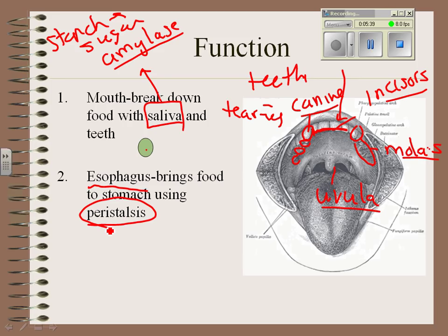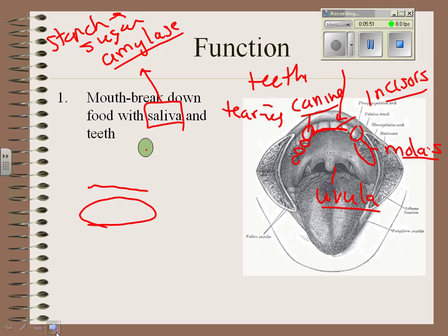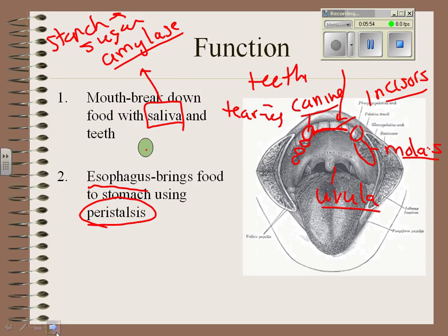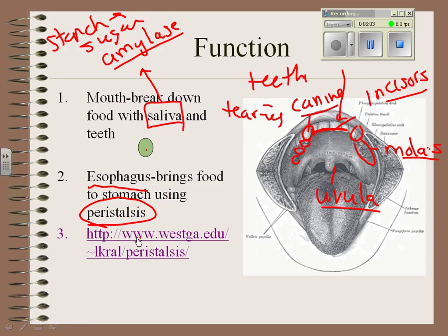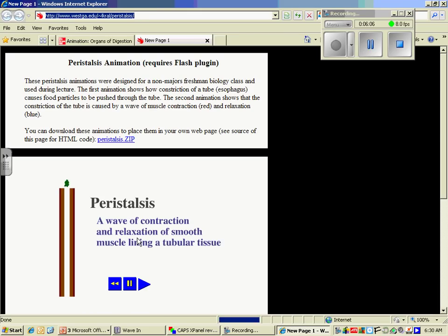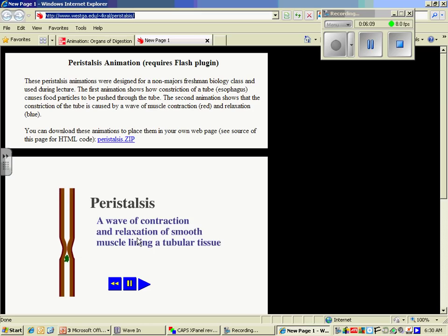The nice thing about the digestive system is that once you swallow your food, it's done — you don't have to think about it anymore, it's on its way. The reason it's on its way is a series of rippling, wave-like muscle contractions called peristalsis. It's a wave of muscle contractions that squeeze food along, and this happens in all of your tubes in your digestive system.